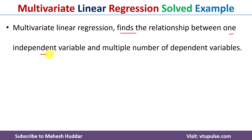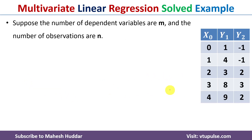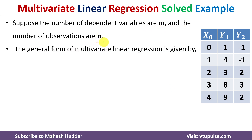In multivariate linear regression, we try to find the relationship between one independent variable and multiple dependent variables, also called response variables. This model is similar to multiple regression where we solve the normal equations and estimate the regression coefficients. Suppose the number of dependent variables is m and the number of observations is n. The general form of multivariate linear regression is given by: y_i = β₀ᵢ + β₁ᵢ·xᵢ, where i indexes the response variables.